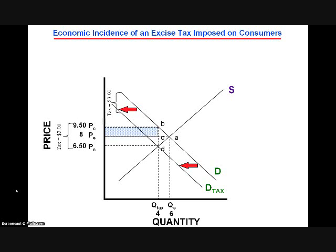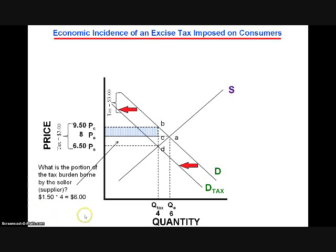What is the portion of the tax borne by suppliers or sellers? This is indicated by the difference between the equilibrium price, PE, which is $8, and the effective price realized by suppliers, PS, which is $6.50, multiplied by the output in the taxed market, Q subscript tax, which is 4. So $8.00 minus $6.50 is $1.50, times the quantity 4, equals $6.00. Suppliers, or sellers, also bear $6.00 of the total $12.00 burden of this tax. Graphically, this is depicted by the lower unshaded rectangle P subscript E, P subscript S, D, C.